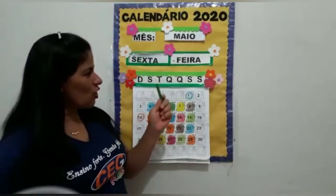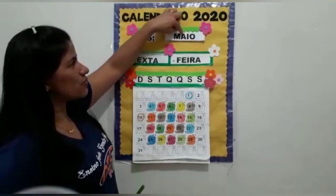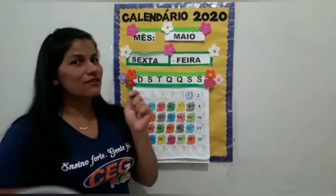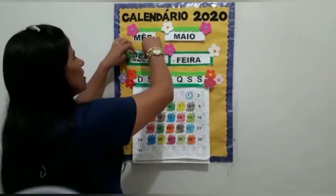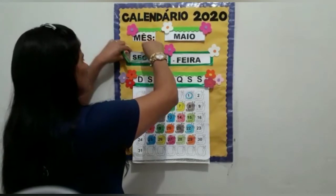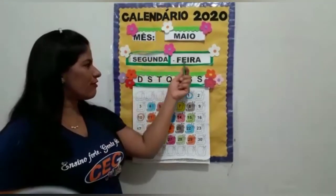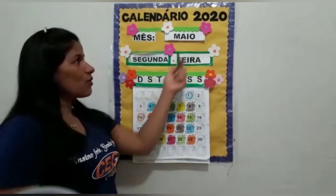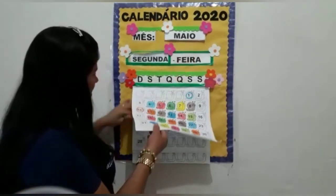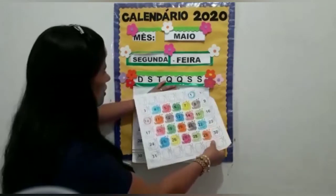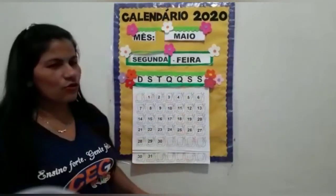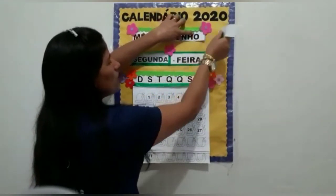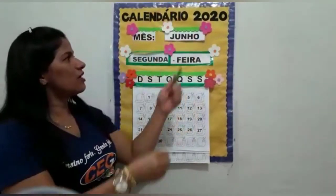Nós temos que fazer a troca, certo? Terminamos o mês de maio. O dia da semana hoje não é sexta-feira. Sexta-feira foi o último dia de aula, não foi mesmo? Então, vamos fazer a troca. Nosso primeiro dia de aula da semana é segunda-feira, e olha aqui — segunda-feira. Não tem mais segunda-feira para o mês de maio, então nós vamos fazer essa troca.